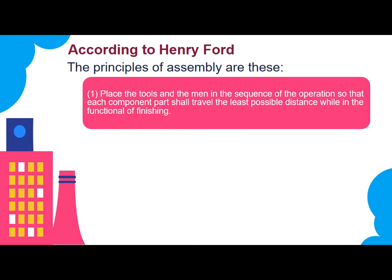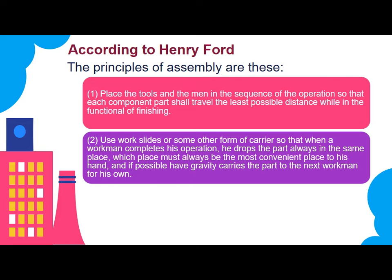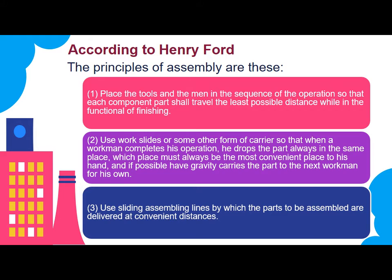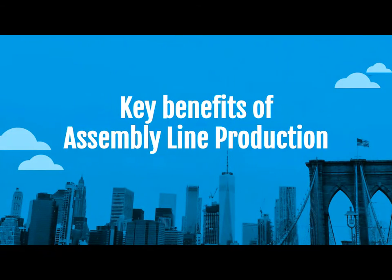Each worker typically performs one simple operation. According to Henry Ford, the principles of assembly are: first, place the tools and men in the sequence of operation so that each component part travels the least possible distance. Second, use work slides or some form of carrier so that when a workman completes his operation, he drops the part at the most convenient place to his hand, and if possible have gravity carry the part to the next workman. Third, use sliding assembly lines by which the parts to be assembled are delivered at convenient distances.